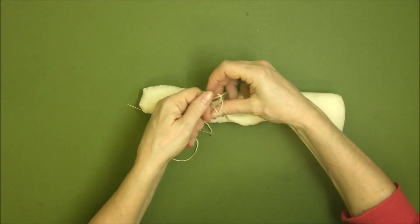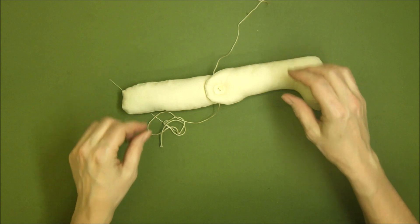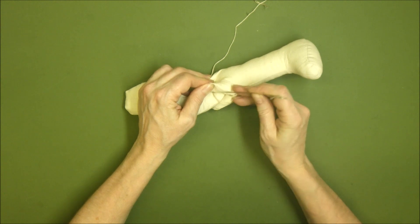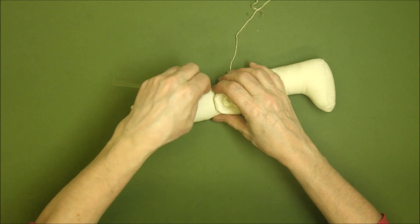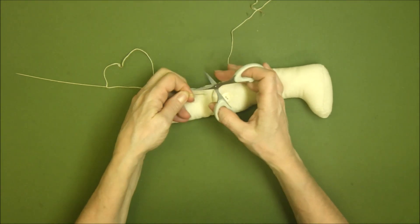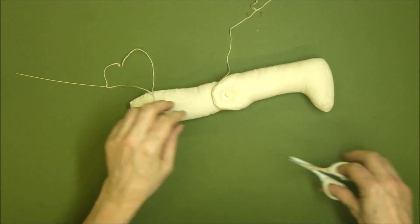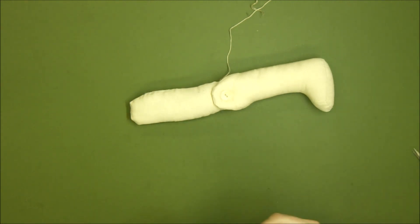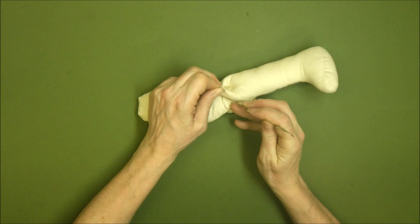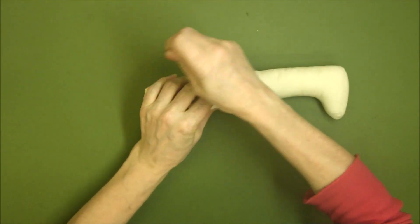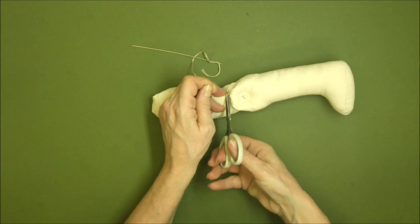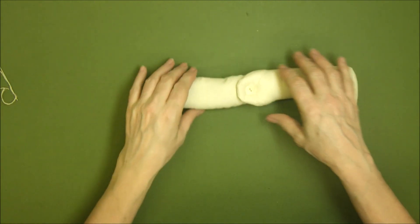Now I've got nice long bits of thread, so I'm going to go back into very close to where I've come out. It doesn't matter where you go now - just pass it through, pull it nice and tight, and snip close to the fabric so that the end disappears inside. Then pass the remaining thread smoothly through the other side, pull it tight and snip. There you go, and we have a knee.